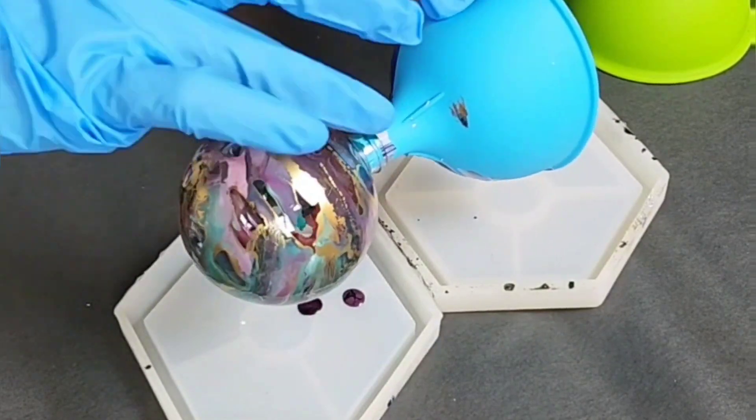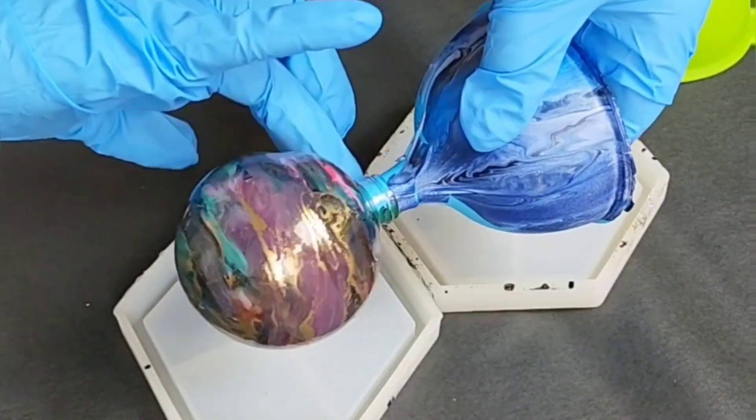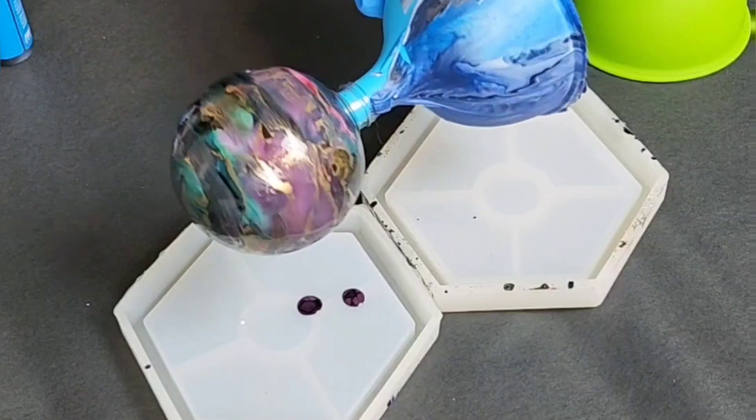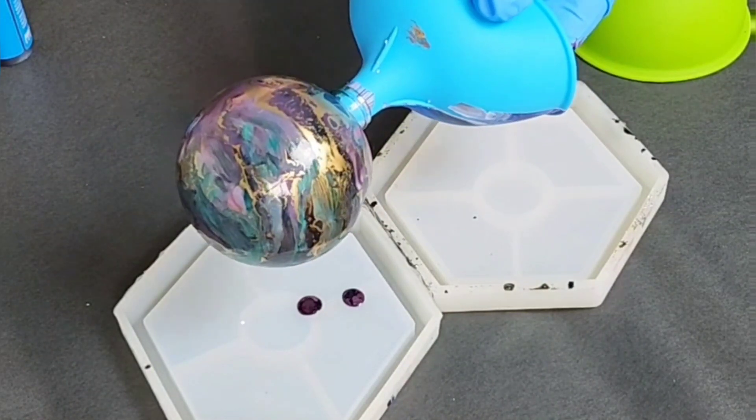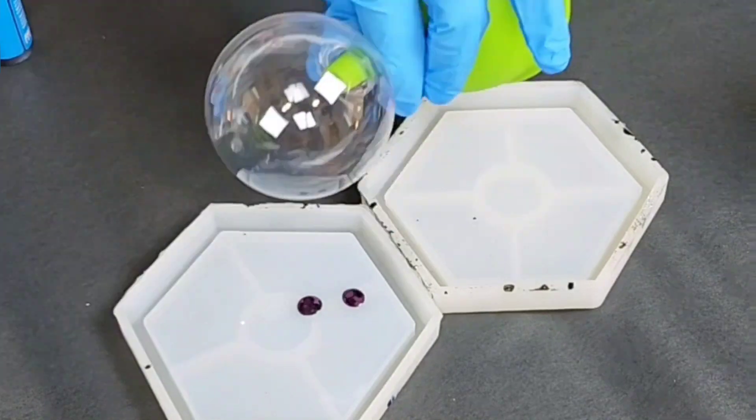I did not do anything to prep the ornament, I just basically went right in there with the alcohol ink. So for this one I used green, red, white, and gold, and I think it came out gorgeous.